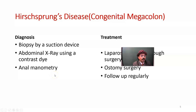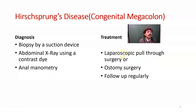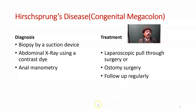Treatment is laparoscopic pull-through surgery or ostomy surgery, depending on the surgeon's expertise and the patient's condition. Regular follow-up after surgery is important because there is a chance of anal incontinence. Children with Hirschsprung's disease should attend school with a bathroom facility close to the classroom.